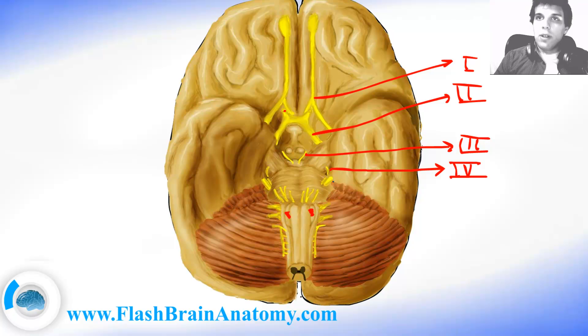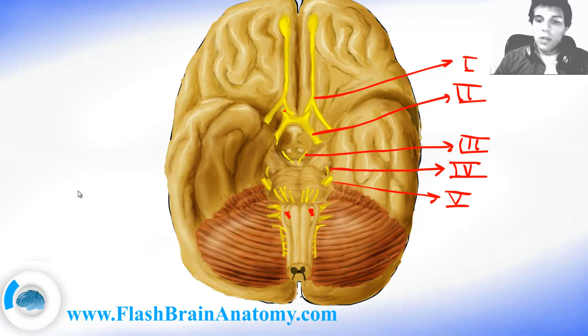The fifth cranial nerve is the trigeminal nerve. It is important for innervating the muscles of mastication and it also receives sensation from the face.